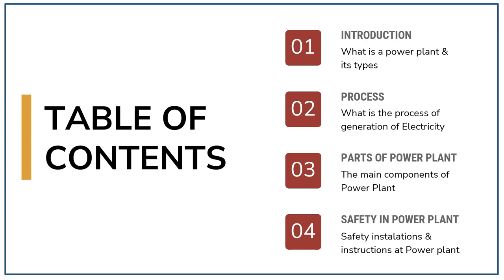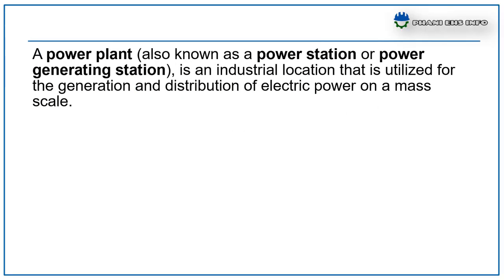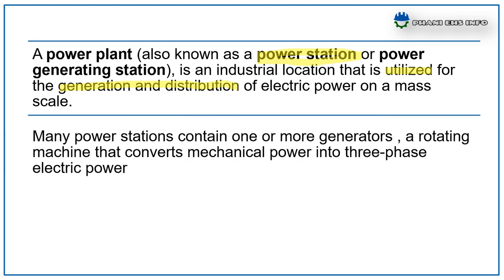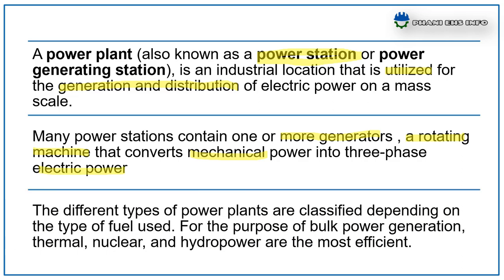Let me start with the introduction. A power plant, also known as a power station or power generation station, is an industrial location that is utilized for generation and distribution of power on a mass scale. Many power stations contain one or more generators, a rotating machine that converts mechanical power into three-phase electrical power. The different types of power plants are classified depending on the type of fuel used. For the purpose of bulk power generation, thermal, nuclear and hydro powers are most efficient.